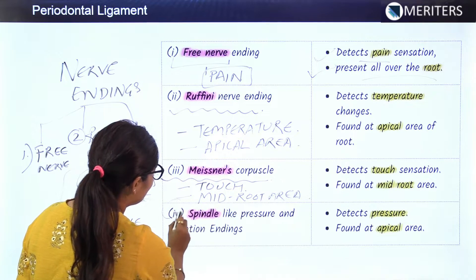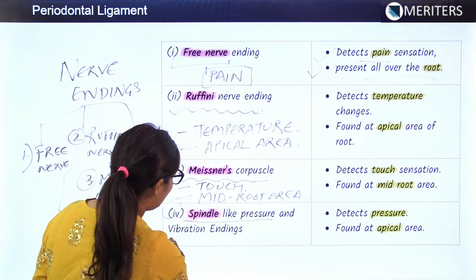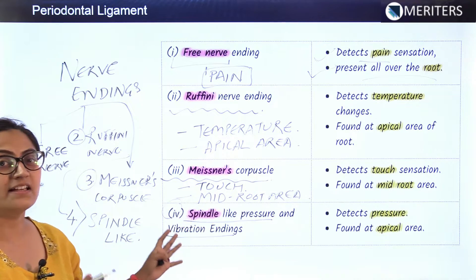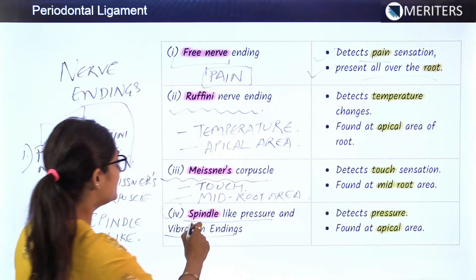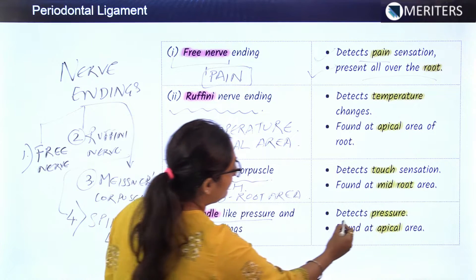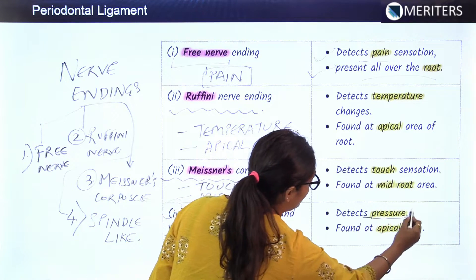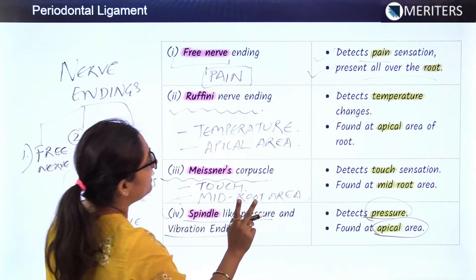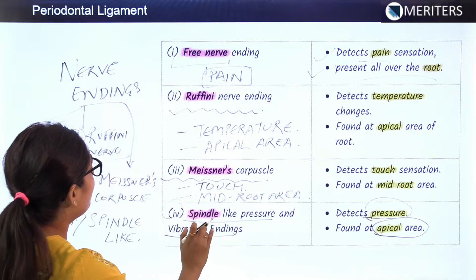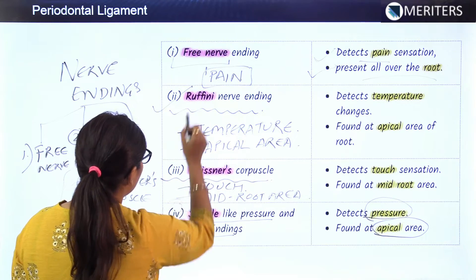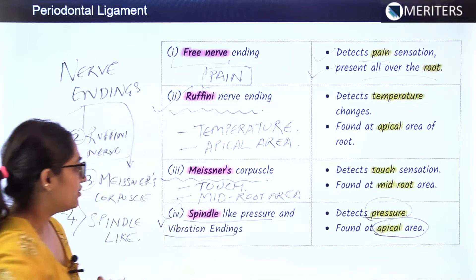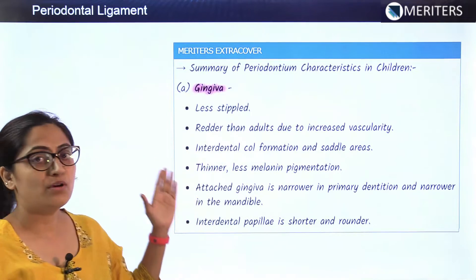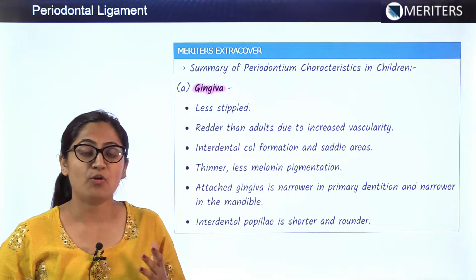The last nerve ending is the spindle-like pressure and vibration endings, which detect pressure and vibration. These are found at the apical area. So two nerve endings are found at the apical area: the Ruffini nerve endings and the spindle-like pressure and vibration endings. These are important points to keep in mind for NEET exam questions.